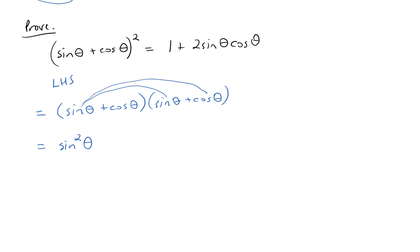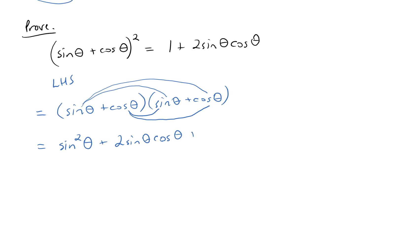Then we get sine theta times cosine theta, and another sine theta times cosine theta, giving us 2 sine theta cosine theta. Keeping an eye on the right-hand side, we can see this is exactly what we need there. All that remains is cosine theta times cosine theta, which is cosine squared of theta.